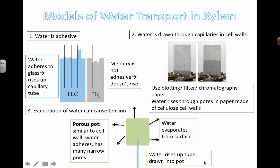If you have something connected to the bottom, you can see an air bubble or the end of the water moving up. Similar to the cell wall, the water adheres. The porous pot has many narrow pores, and as the water evaporates from the surface, the water rises and is continuously drawn into the pot. So there you go — three quick models of water transport in xylem, demonstrating the properties of water and how they contribute to transpiration and moving water through plants.